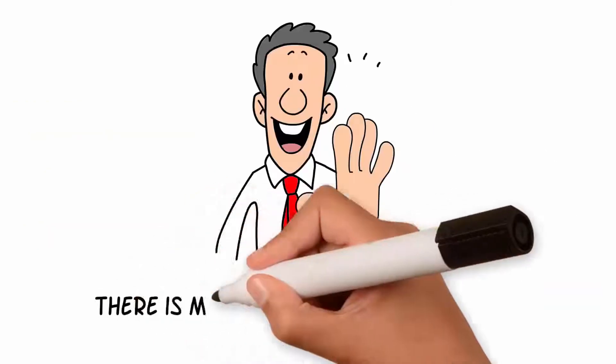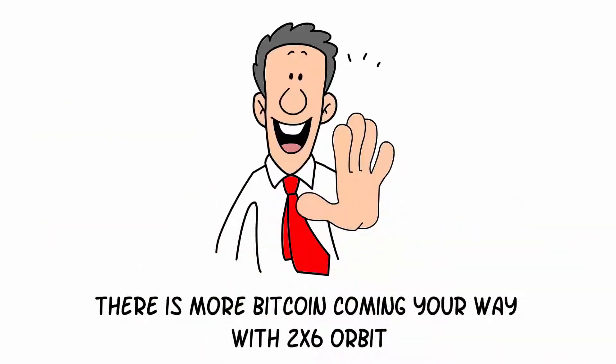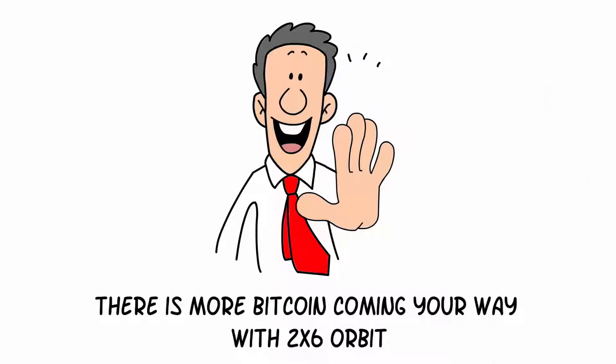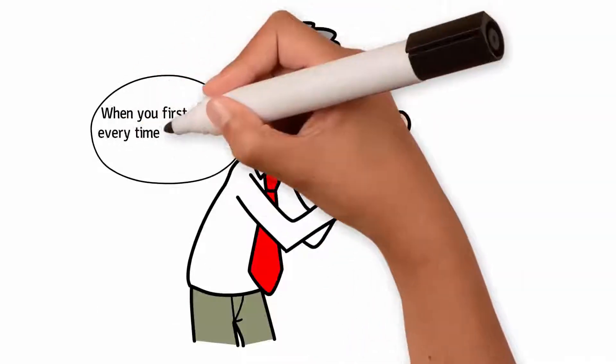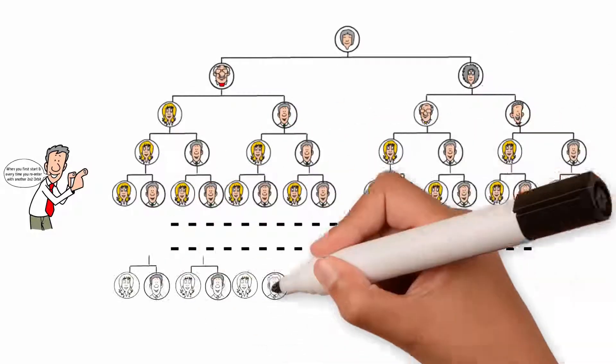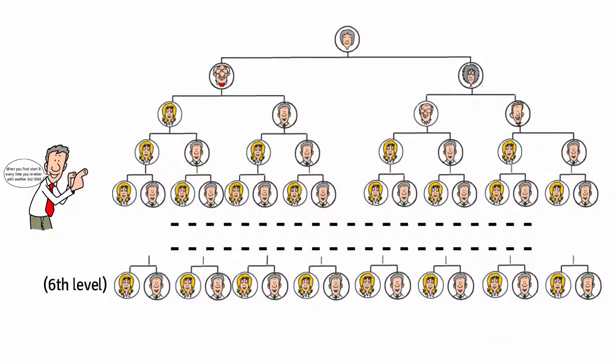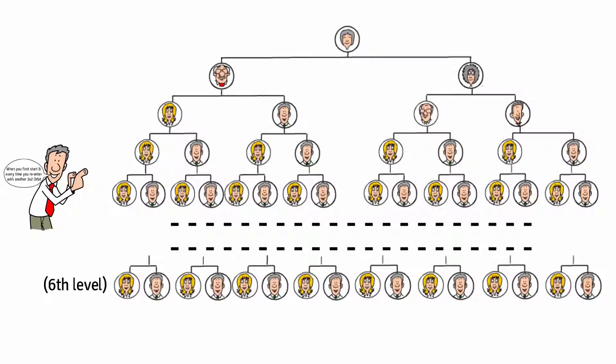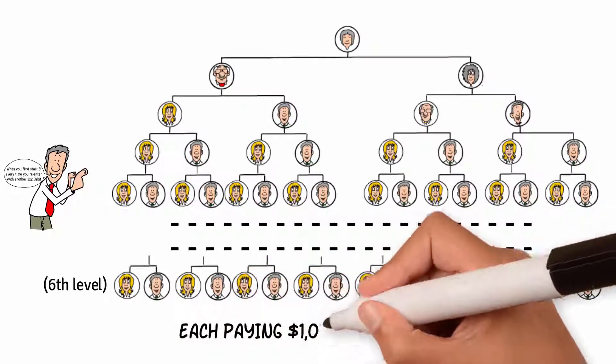But wait, there's more bitcoin coming your way with the 2x6 orbit matrix. When you first start and every time you re-enter with another 2x2 orbit, you also get another 2x6 orbit matrix. This means you can accumulate an unlimited number of 2x6 orbit matrices, each paying you up to $1,000 in bitcoin.